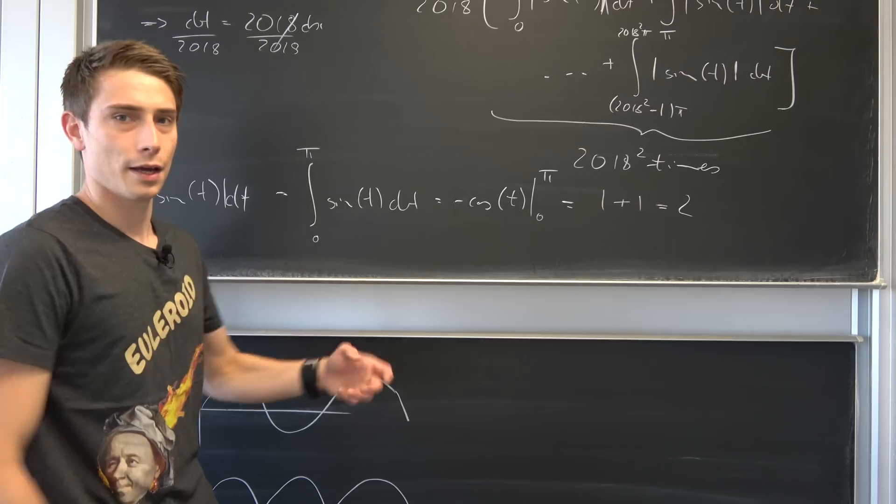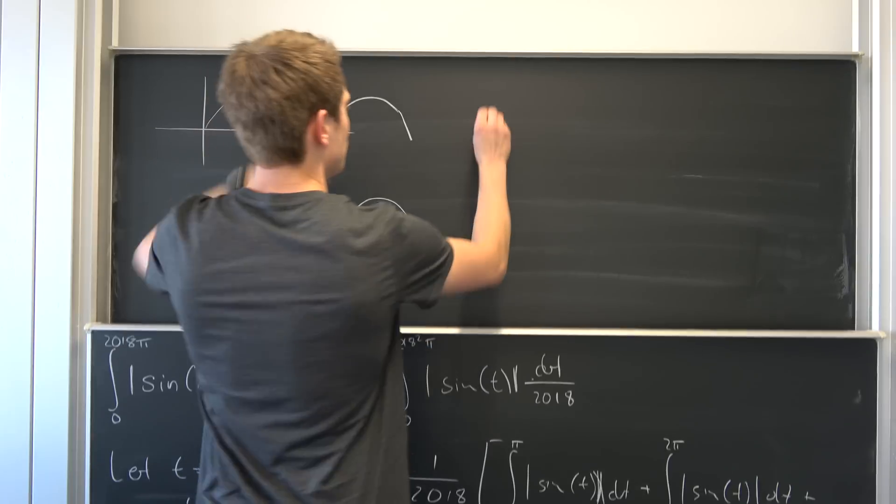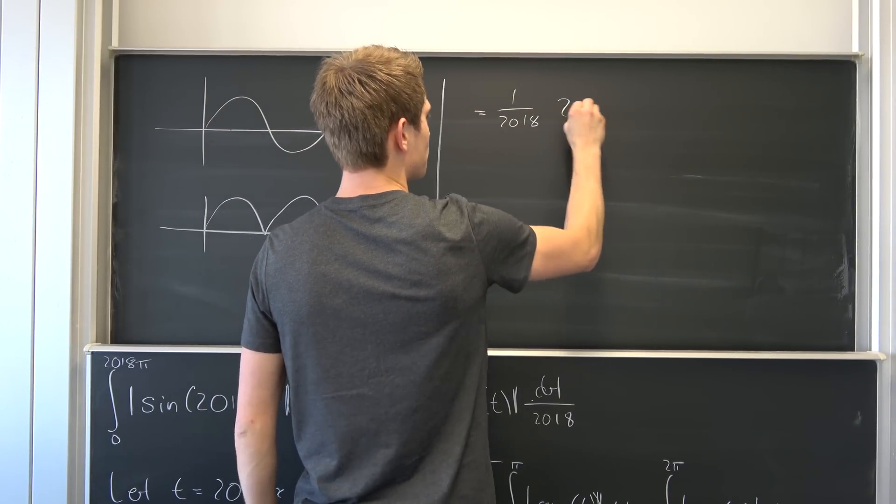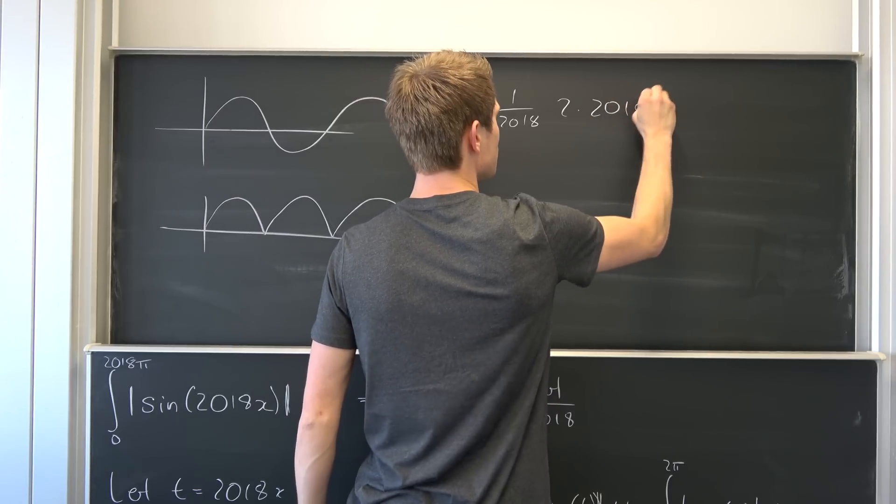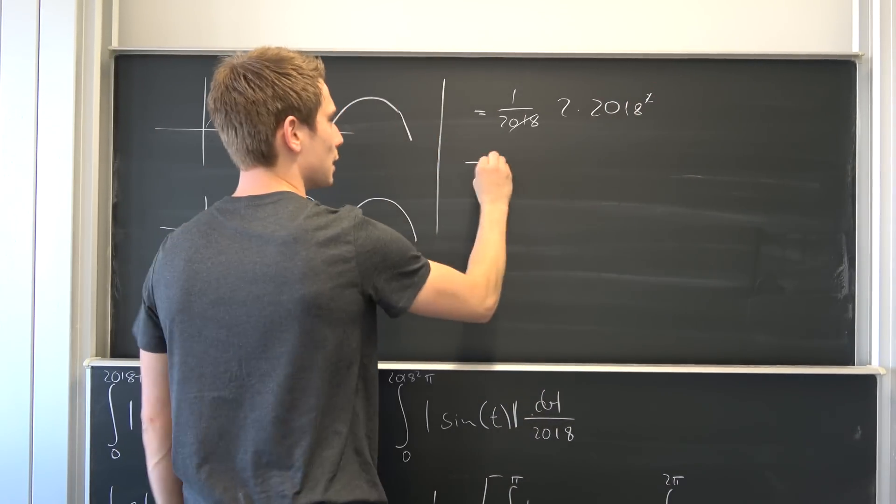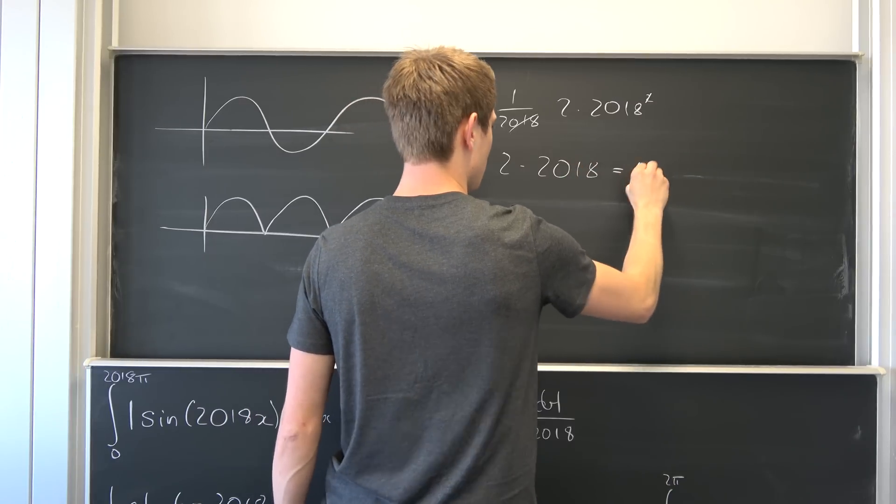And now the final value of our integral, it's nothing but, so we have 1 over 2018, then we have 2 times 2018 squared. This and that is going to cancel out, we end up with 2018 times 2, and this is nothing but 4036.